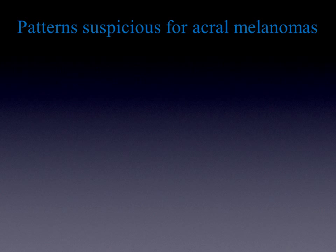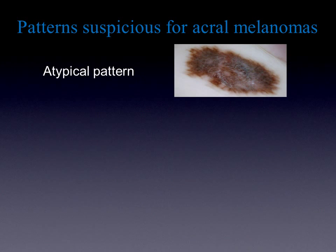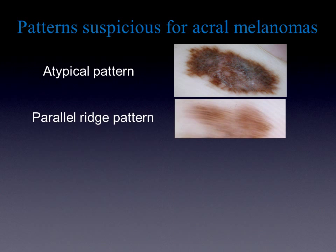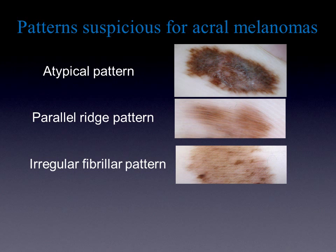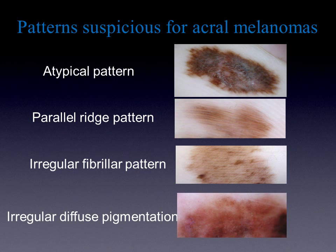To summarize the patterns suspicious for acral melanomas: of course there is the atypical pattern as found also in other melanomas. Most importantly in early melanomas, the parallel ridge pattern. Also the irregular fibrillar pattern is characteristic for acral melanoma. And finally, irregular diffuse pigmentation. I hope these podcasts were useful for you — goodbye and thank you for your attention.